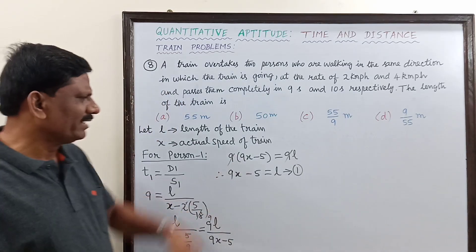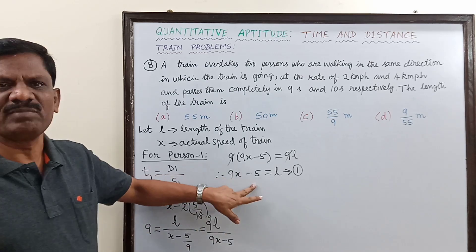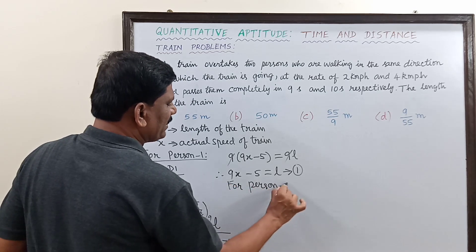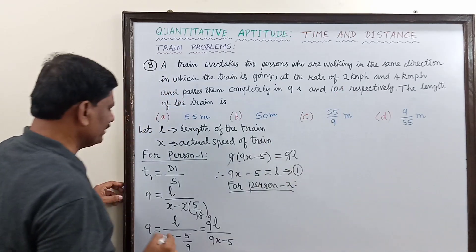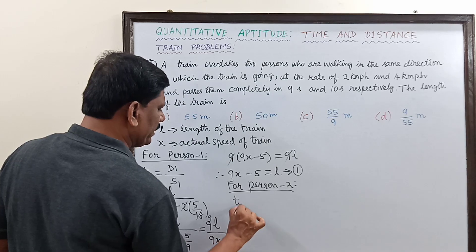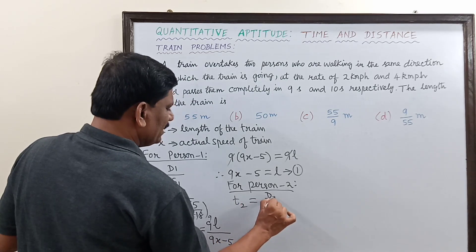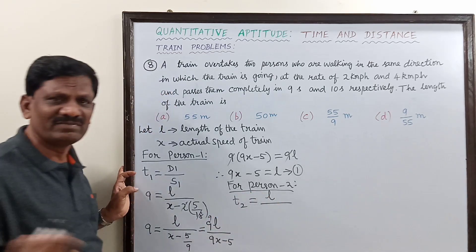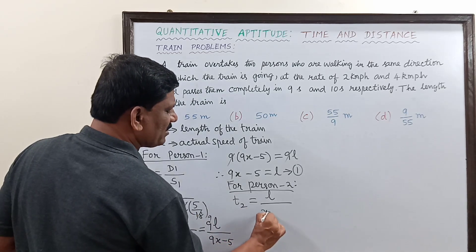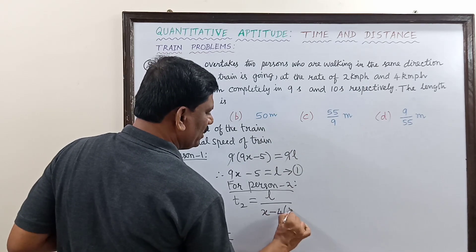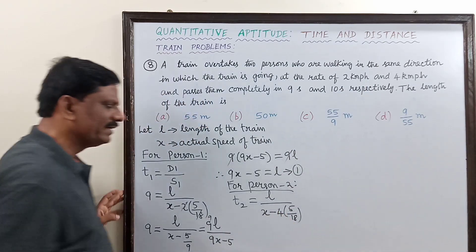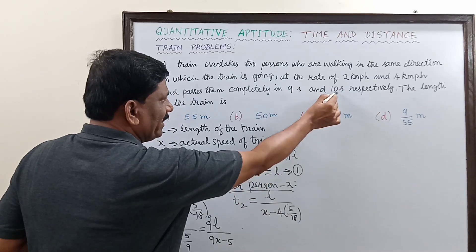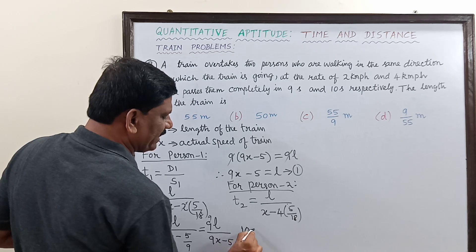Similarly, for person 2, another equation is written for the second person who is traveling at 4 km/h. t2 equals the distance traveled — which is the length of the train L — divided by the relative speed. The relative speed with respect to the second person is (x minus 4) km/h, converting to m/s gives (x minus 4) × 5/18, which equals (9x minus 20)/9 or (10/9) when evaluated. The time taken is 10 seconds, so 10 equals L divided by (9x minus 10)/9.